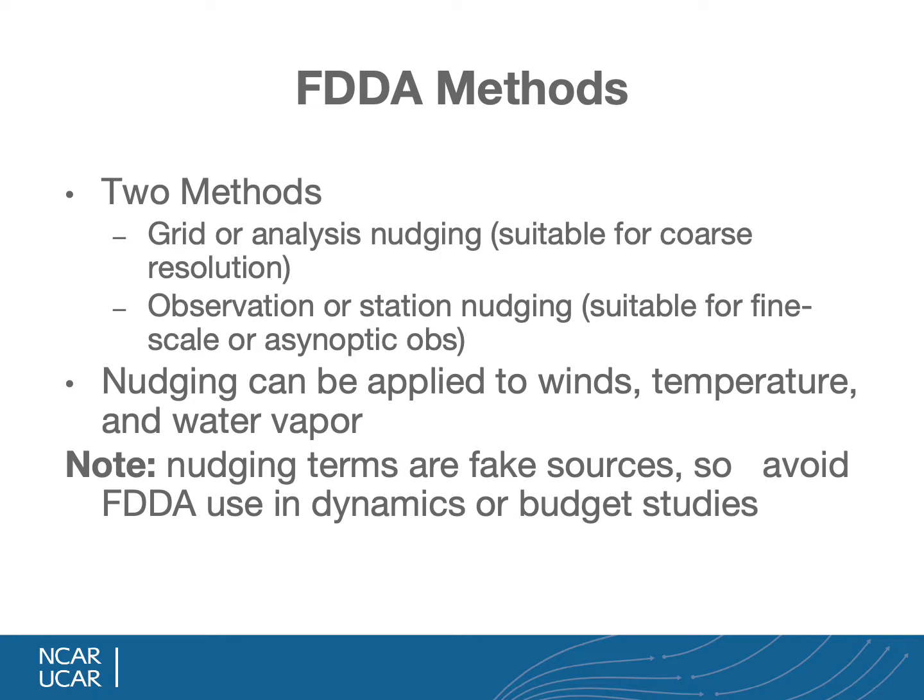There are two basic methods of FDDA. One is grid or analysis nudging, which is suitable for coarse resolution where the analysis may be trustworthy. The other is observation or station nudging, suitable for fine-scale or asynoptic observations, because you can use observations between analysis times. Nudging can be applied to winds, temperature, and water vapor. Nudging terms are known as fake sources, so avoid FDDA use in dynamics or budget studies.